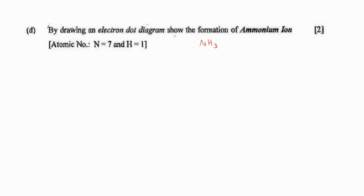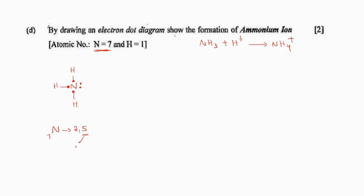By drawing an electron dot diagram, show the formation of ammonium ion. Ammonia will be reacting with H⁺ ion and that will result in the formation of NH₄⁺ ion. The structure of ammonia has three bonds around nitrogen. Given the atomic number, nitrogen's electronic configuration is 2, 5. Out of 5 valence electrons, 3 are bonded with hydrogen. The remaining 2 form a lone pair.